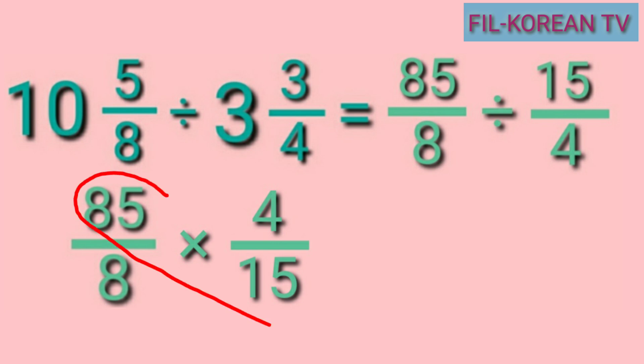To use cancellation, we will get the GCF of 85 and 15, as well as the GCF of 8 and 4, and we will divide them by their GCF. The GCF of 85 and 15 is 5. So let's divide them by 5 and cancel them.